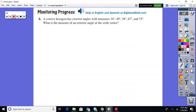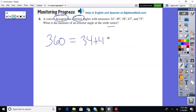All right, welcome back. Convex hexagon has exterior angles. All right, what is the measure of the sixth exterior? Well, as soon as you see exterior, you know it adds up to 360. 34, 49, 58, 67, 75.